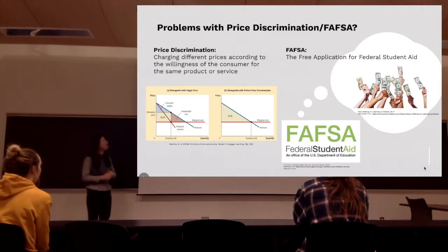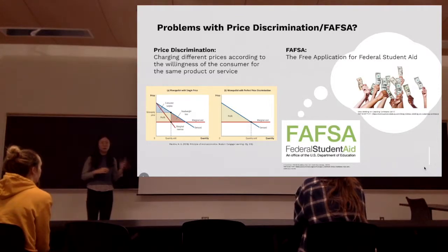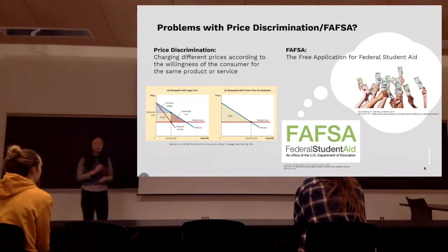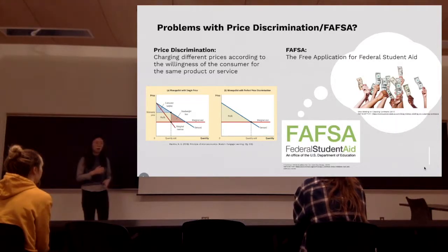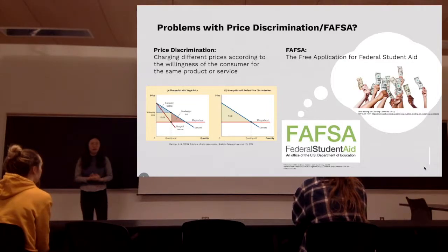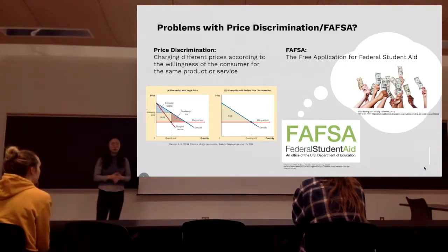What is price discrimination? Price discrimination is defined as when a business or company wants to maximize their profit, they charge different consumers different prices based on their willingness to pay. Similarly, colleges use FAFSA information — which is students' Free Application for Federal Student Aid — to price discriminate students by their tuition.